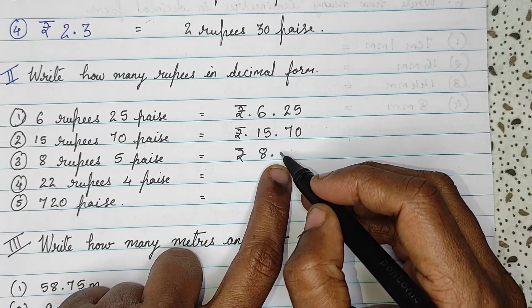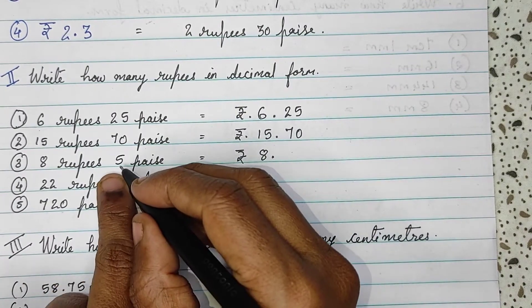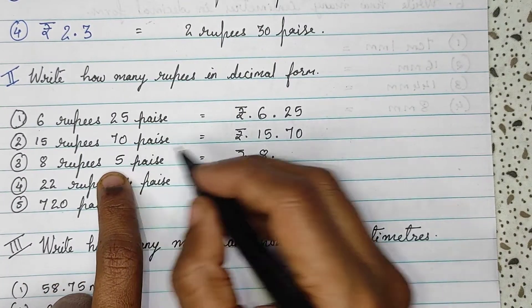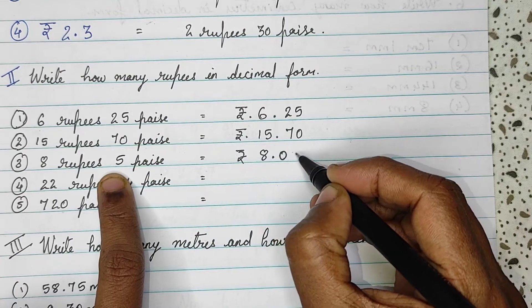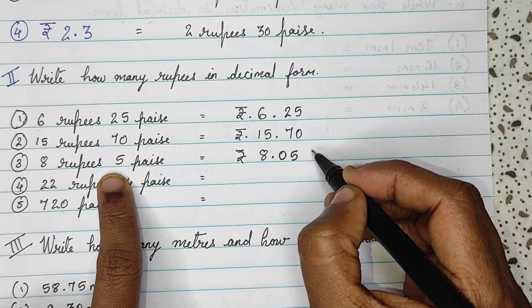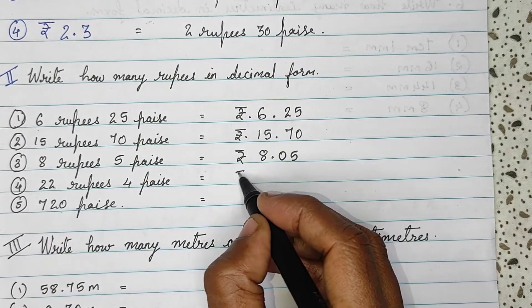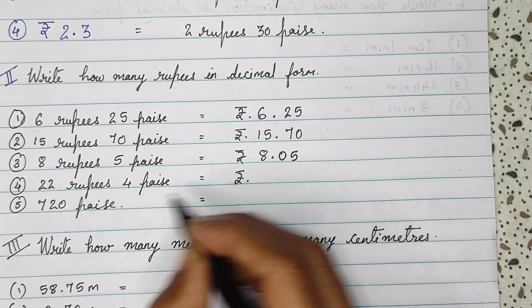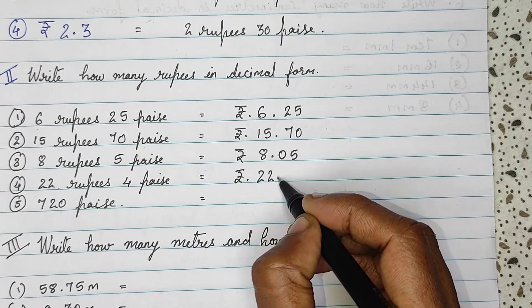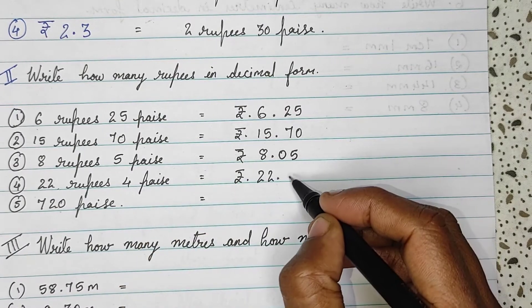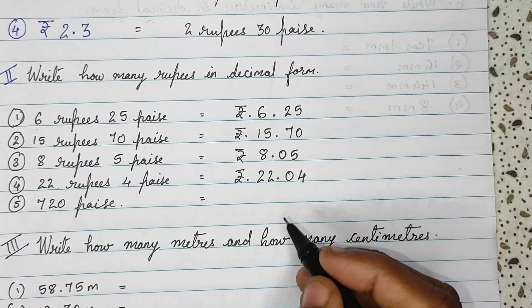Immediately after the point, we count as 10, 20, 30 like this. So, 5 paise is written as 0 and then 5 — first 0, then 5. So, R 8.05 is 5 paise. Next question: 22 rupees and 4 paise — that means rupees 22 and 4 paise, written as 0 then 4, so R 22.04.